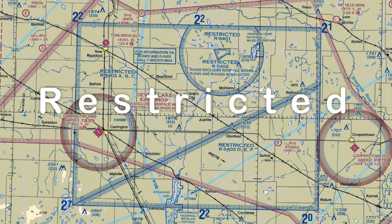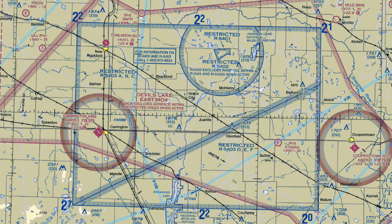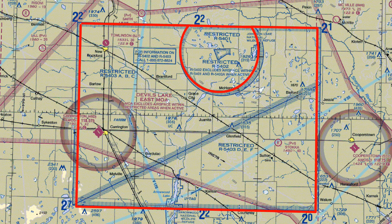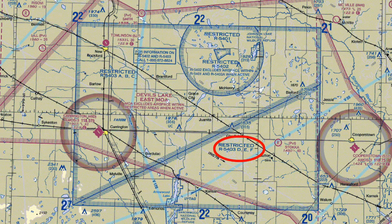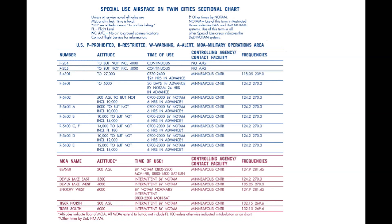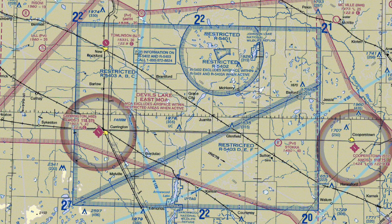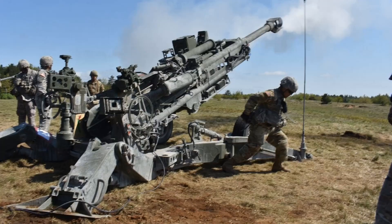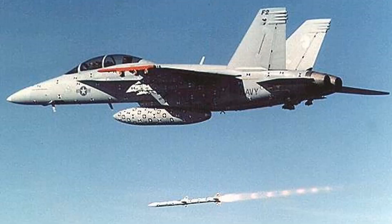Restricted areas are areas where flight may also be prohibited, but they are not necessarily always in operation. They are depicted on the sectional charts with a blue hashed outline, but have an R designator. Their details are also in the sectional chart legend, and their status may be obtained by ATC. These areas often contain military activity that is extremely hazardous to other aircraft, such as live artillery firing, aerial gunnery, or guided missiles. When these areas are active, they are often referred to as HOT.